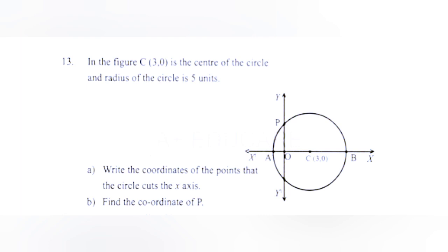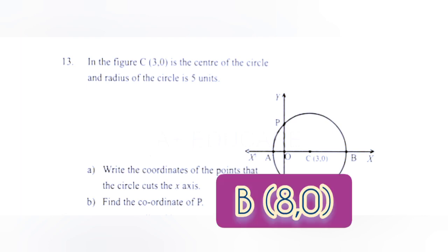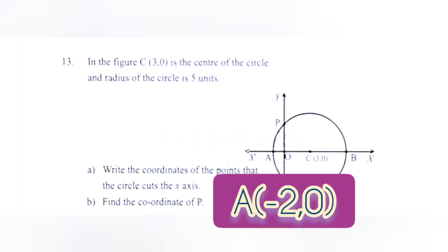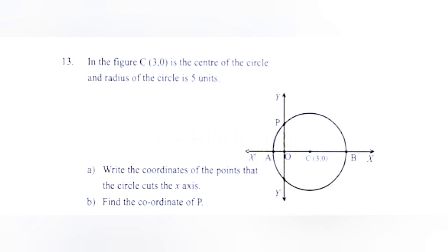Question 13: In the figure, C(3, 0) is the center of a circle with radius 5 units. Part a: The coordinates of the points where the circle cuts the x-axis are (8, 0) and (-2, 0). Part b: Find the coordinate of P. Using OA times OB equals OP squared: 2 times 8 equals OP squared, so OP equals root 16 equals plus or minus 4. The coordinate of P is (0, 4).